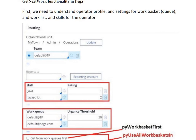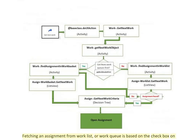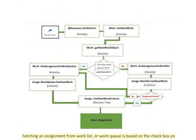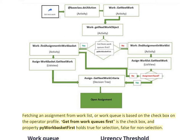When we click on the Get Next Work button or link, fetching an assignment from the work list or work queue is based on a checkbox on the operator profile. The checkbox is called 'Get from work queues first,' and the property pyWorkBasketFirst holds true when selected and false when not selected.